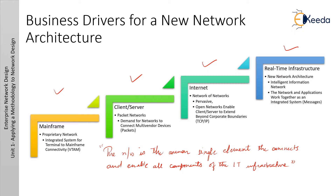The Cisco vision of the next phase of IT evolution is a real-time infrastructure that integrates the network and the application as one system. Organizations are finding that networking is no longer just about connectivity; rather, network intelligence is starting to play a key role in improving business performance and processes. Intelligence enhances the network's role as a foundation for enabling communication, collaboration, and business success. With increased awareness of the applications that operate on the network foundation, the network becomes an active participant in application, network management, business systems, and services. The network is the single common element that connects and enables all components of IT infrastructure.